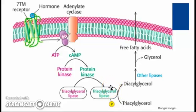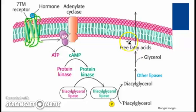Now that triacylglycerol lipase is active, it is able to cleave the ester bond joining a free fatty acid to glycerol. The cleaving of this glycerol bond frees the fatty acid and the triacylglycerol is then converted to a diacylglycerol. From there, diacylglycerol lipase cleaves another ester bond, freeing a fatty acid, and then the diacylglycerol is converted to a monoacylglycerol. Monoacylglycerol lipase then cleaves the ester bond of the remaining fatty acid, leaving the glycerol backbone. The free fatty acid molecules are available to exit the adipocyte and enter circulation.